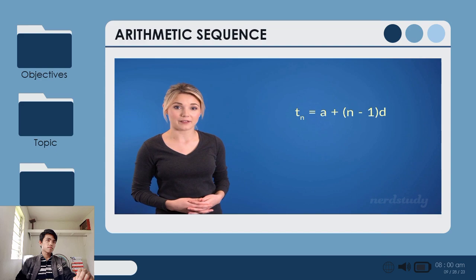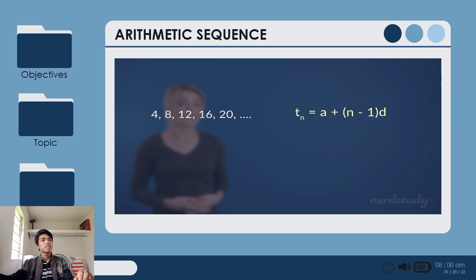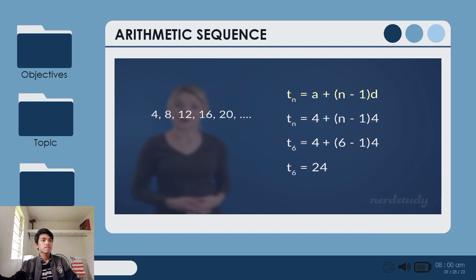So let's put our newfound formula to the test and try an example with some numbers. If we had a sequence like this, we would first realize that our first term is 4, which is the a in the formula. Then we would realize that the difference between each term is also 4, making that our common difference, which is represented as d in this formula. Thus, this would be our formula created for this sequence. If we wanted to solve for the 6th term, all we would have to do is plug 6 into the n to get the following. And if we simplify this, we find out that the 6th term is equal to 24. Awesome!